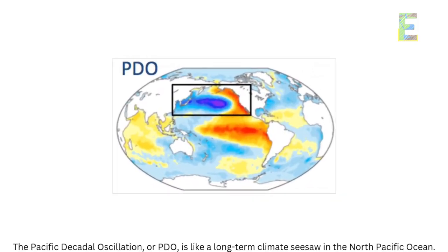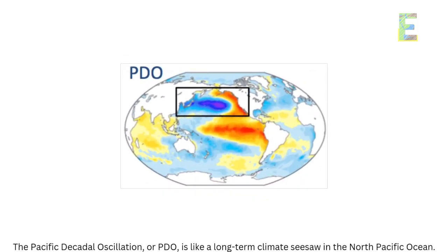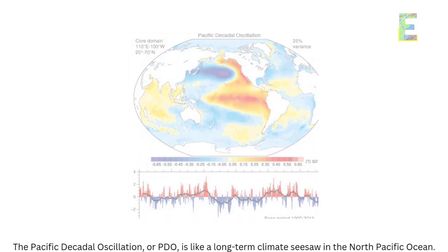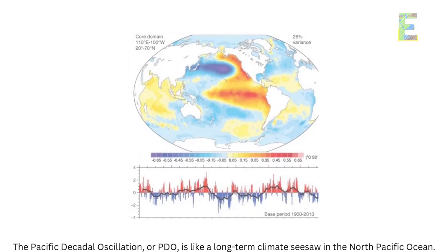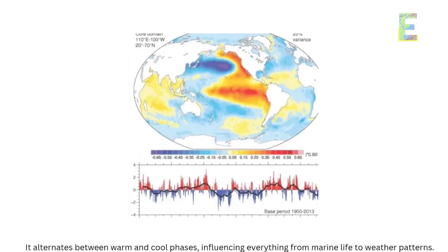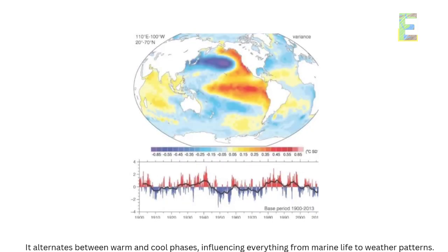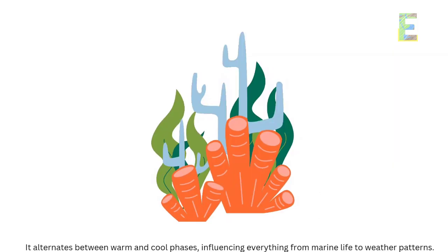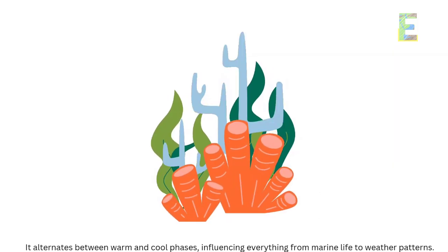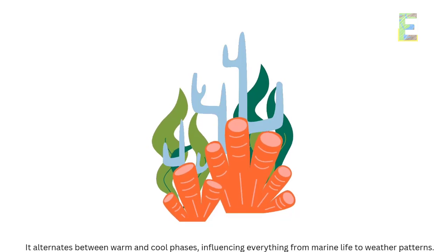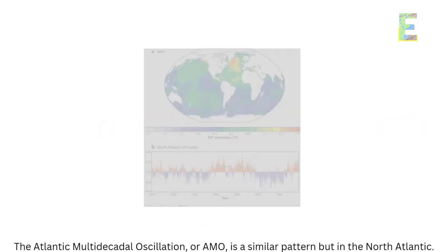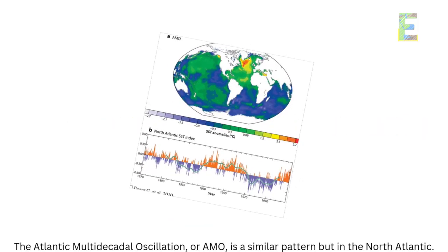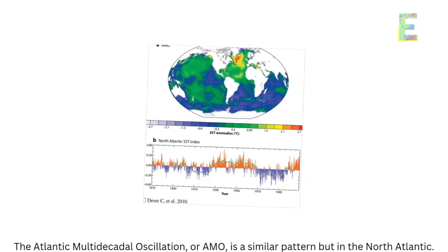The Pacific Decadal Oscillation, or PDO, is like a long-term climate seesaw in the North Pacific Ocean. It alternates between warm and cool phases, influencing everything from marine life to weather patterns.